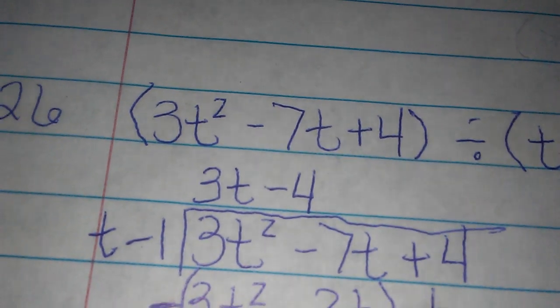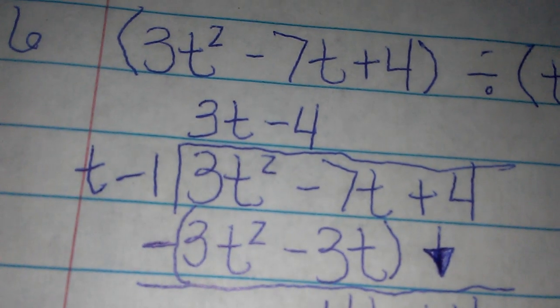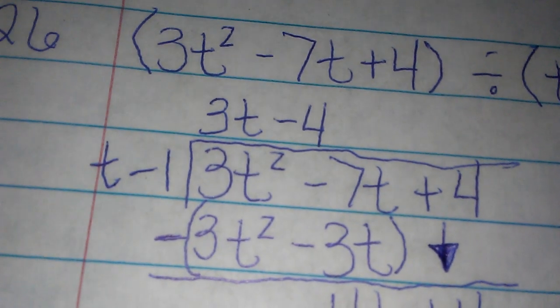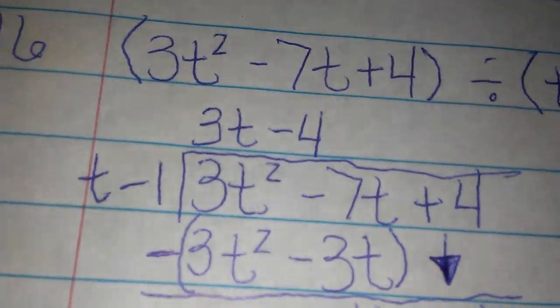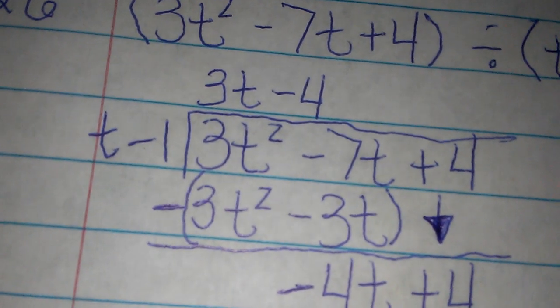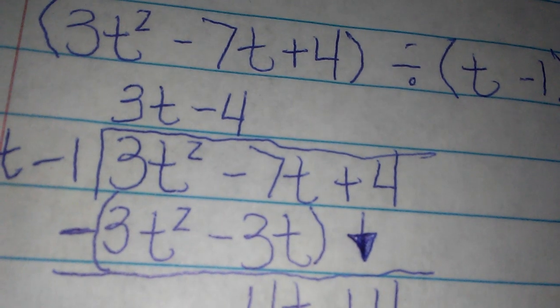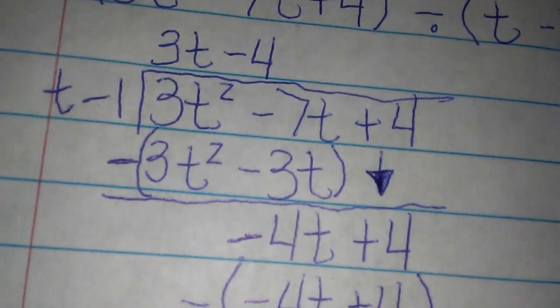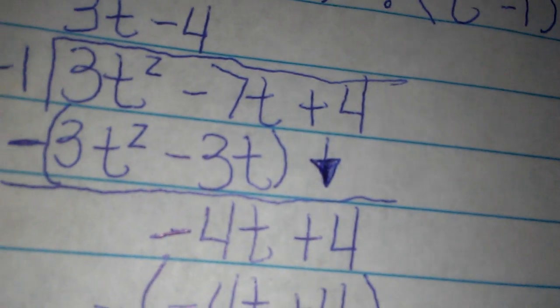So I did all of that, and for 3t squared, t would go into 3t squared 3t times, which is what I did here. And then negative 1 times 3t would be negative 3t, which is what I did. So I got 0 and then negative 4t, and then I brought the 4 down.